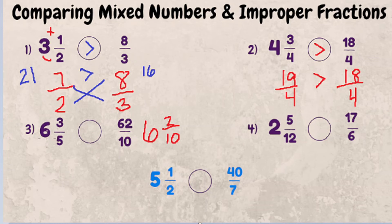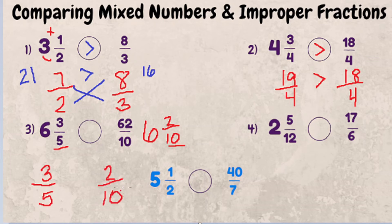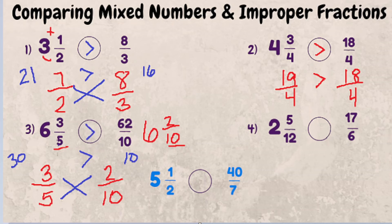We've got a six as the whole number on both sides, so there's no need to evaluate which whole number is bigger — just focus on the proper fraction portion. So let's compare three fifths and two tenths by cross multiplying. Three times ten is 30, and five times two is 10. Since 30 is greater than 10, six and three fifths is greater than 62 tenths.